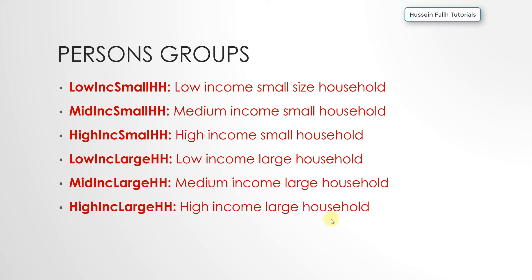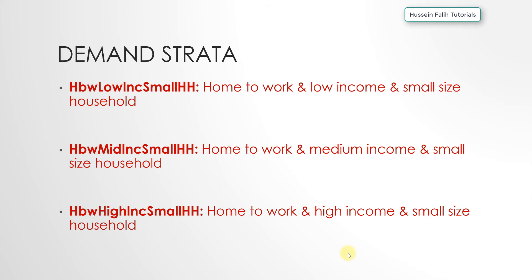It is common practice and a better way to simulate human behavior. The third item is demand strata — the combination of activities and person groups. In other words, a demand stratum is a combination of one activity pair and one person group with homogeneous characteristics. For example: a home-to-work trip with low income and small household, or a home-to-work trip with medium income and small household.